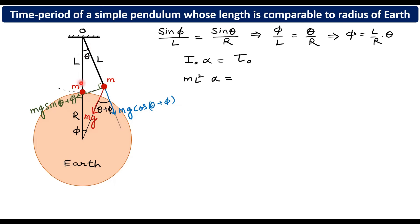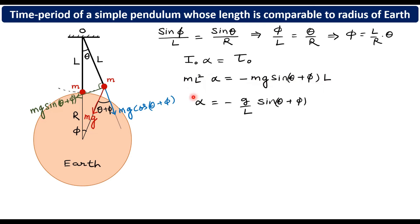Since the angular displacement was given in this direction, this torque tries to rotate the bob back — it is a restoring torque — so we write a negative sign: torque equals minus mg sin(theta plus phi) times L. The mL squared and one L cancel, giving alpha equals minus (g/L) times sin(theta plus phi). Since theta and phi are both very small, theta plus phi is also very small, so we approximate sin(theta plus phi) to theta plus phi.